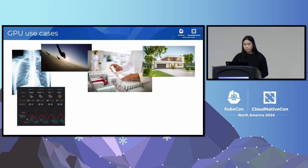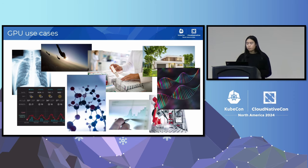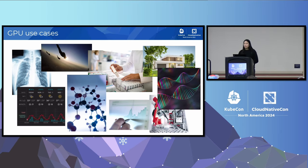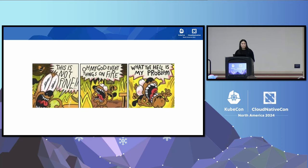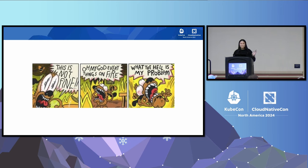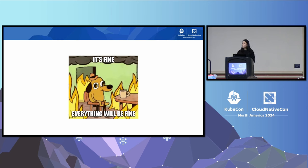Looking at common industry use cases: GPUs excel at scientific calculation, computationally complex algorithms, inferencing, training, and image processing. They're used across many industries — from healthcare to gaming to financial services. But GPUs are expensive and costs can balloon really quickly. If I look at my cloud bill at the end of the day and see how much my GPUs actually cost, I might get sticker shock. So how can we go from that panic to a new mentality where costs are under control?